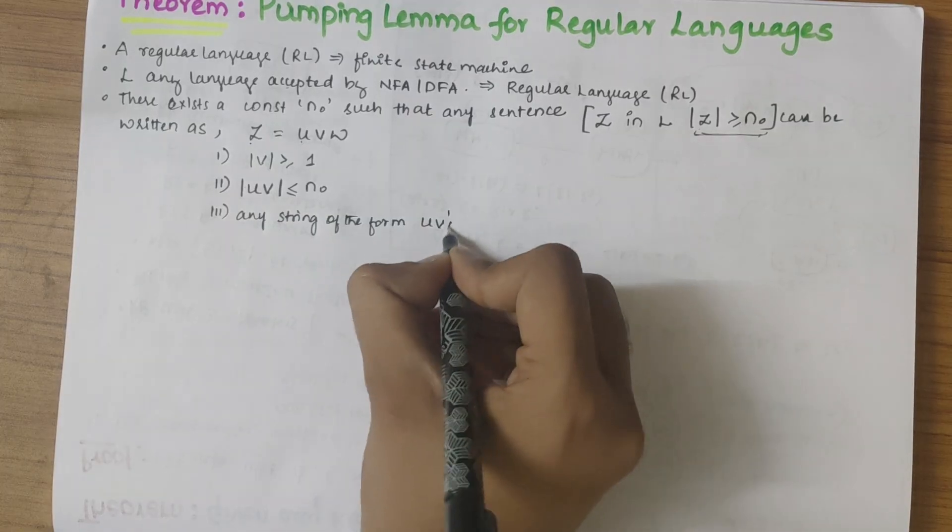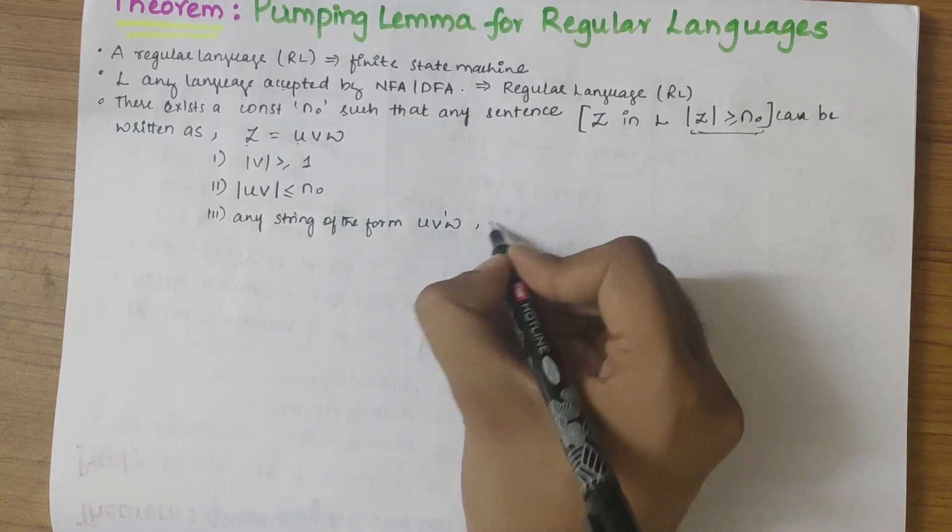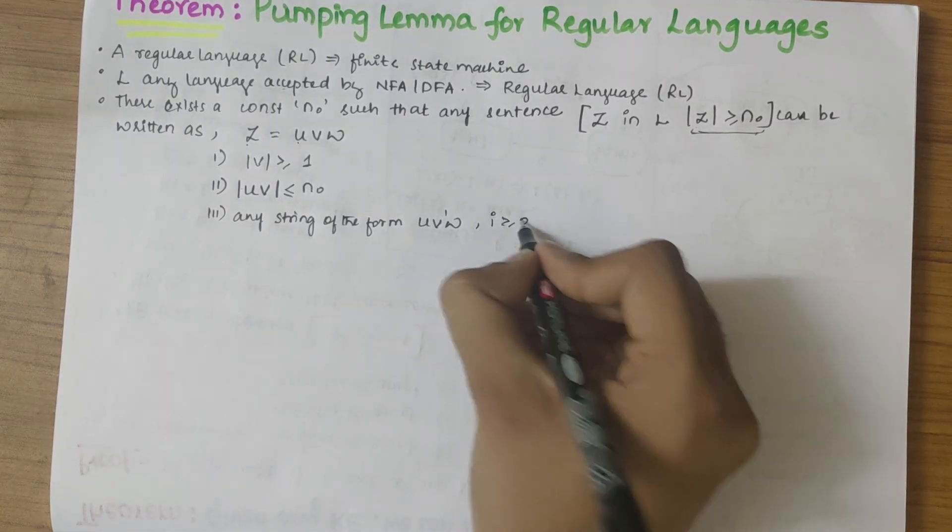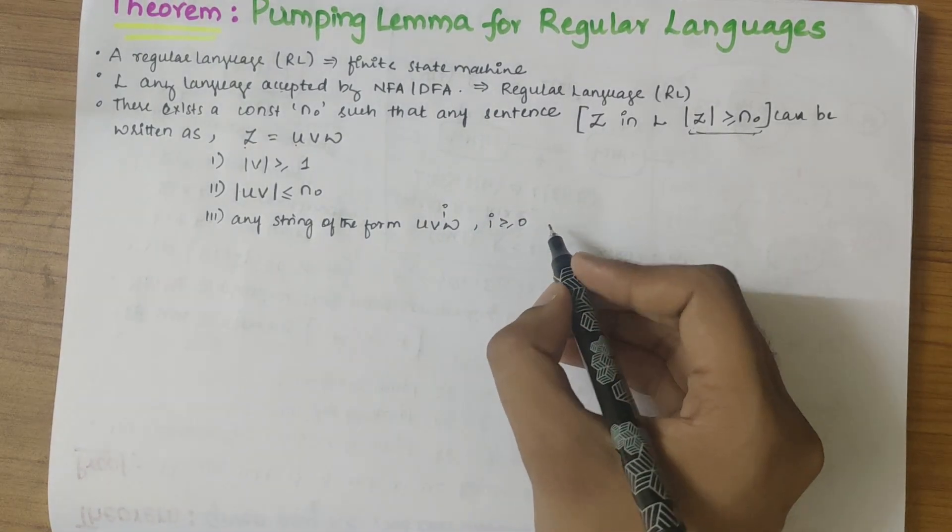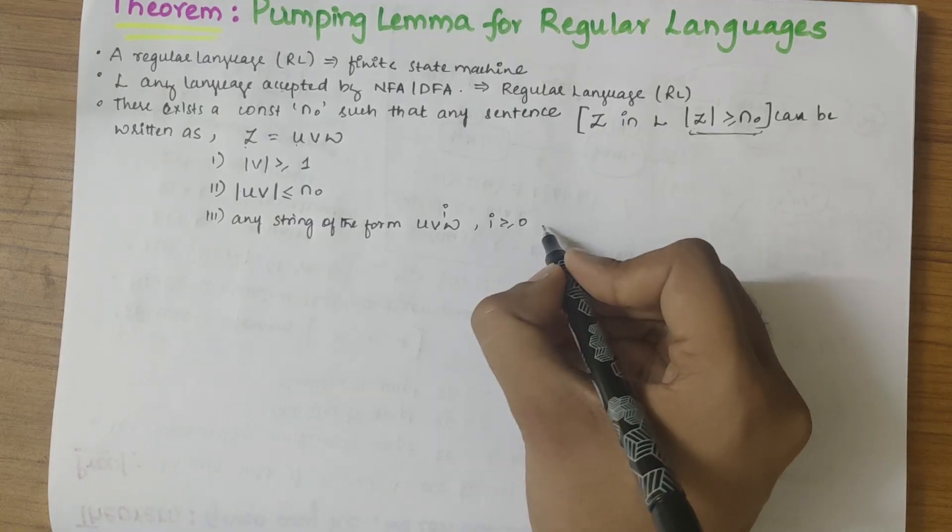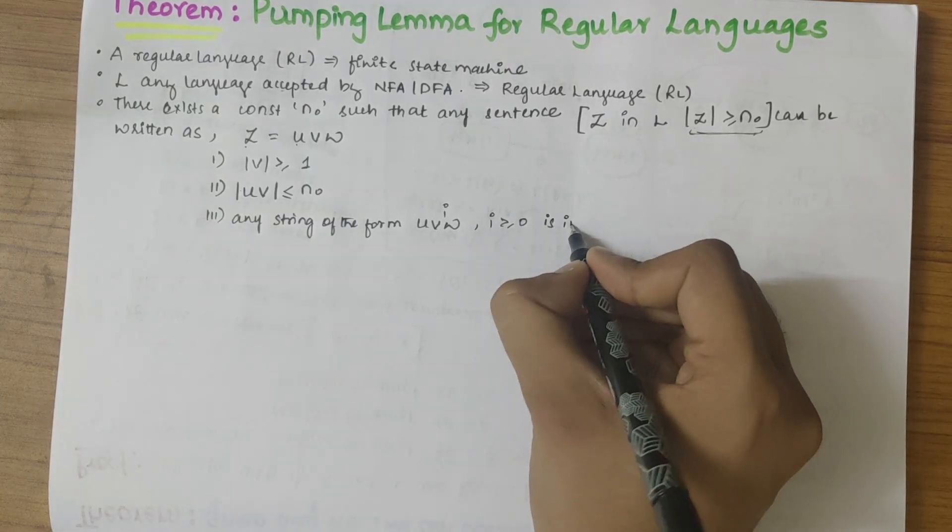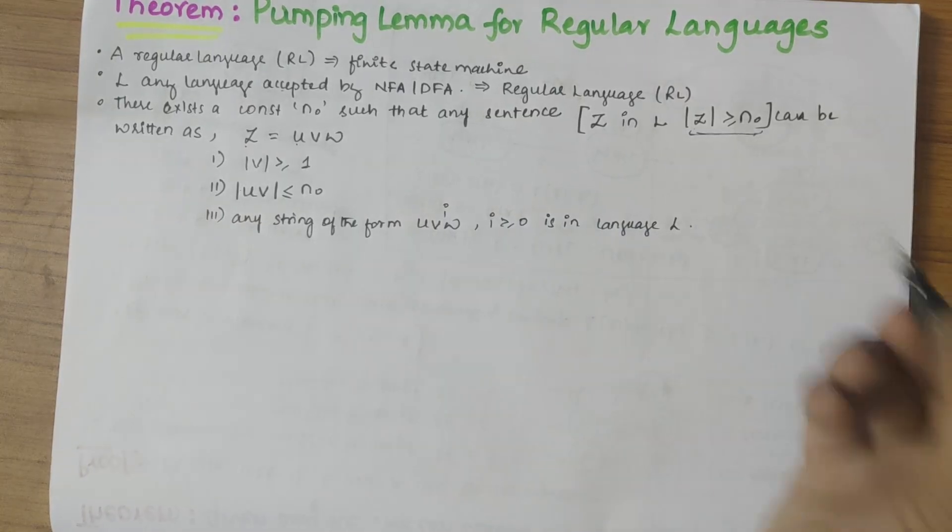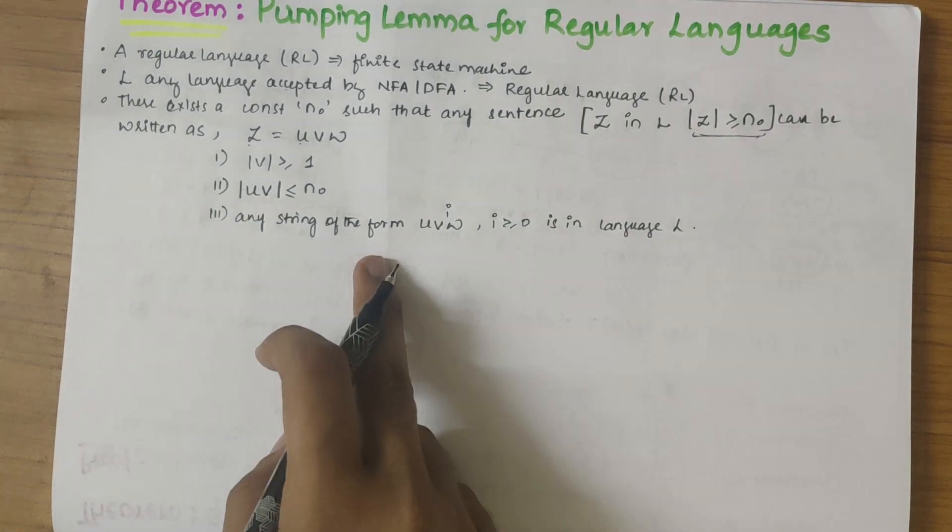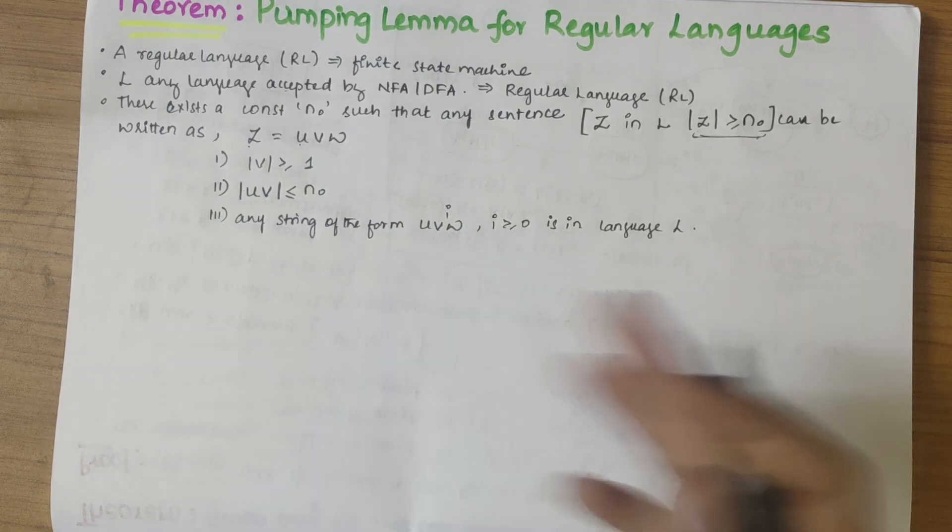u v power i w, such that i is greater than or equal to zero, is in the language L. Or every string longer than number of states may cause a state to repeat.